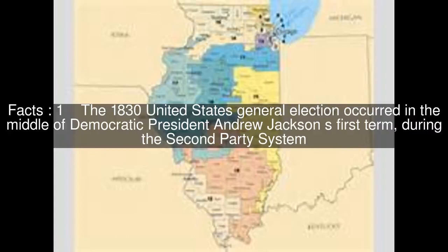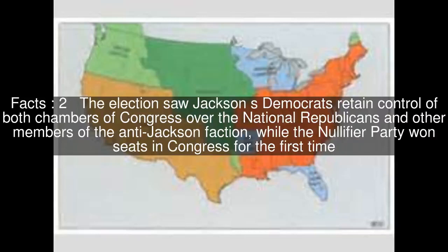The 1830 United States general election occurred in the middle of Democratic President Andrew Jackson's first term, during the second-party system. The election saw Jackson's Democrats retain control of both chambers of Congress over the National Republicans and other members of the anti-Jackson faction, while the nullifier party won seats in Congress for the first time.